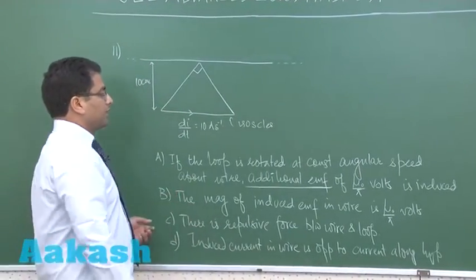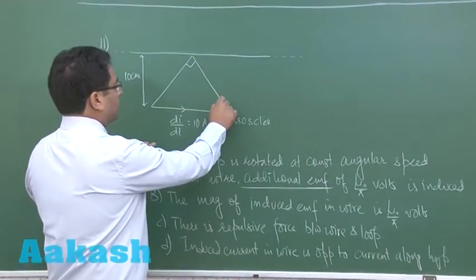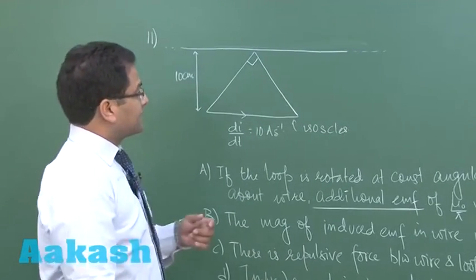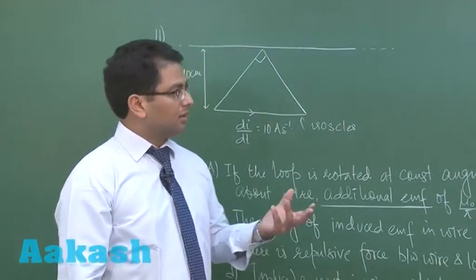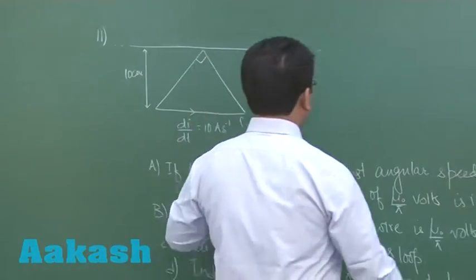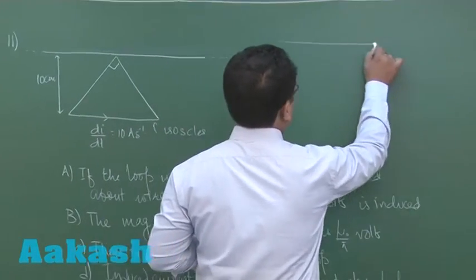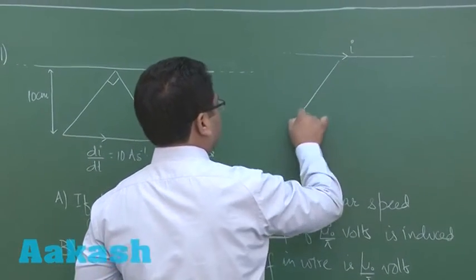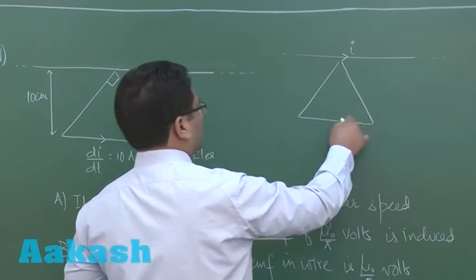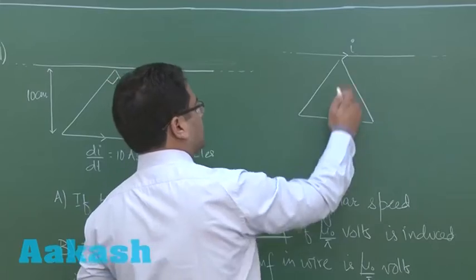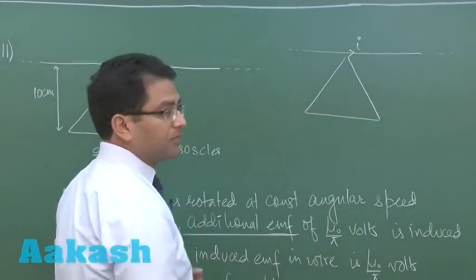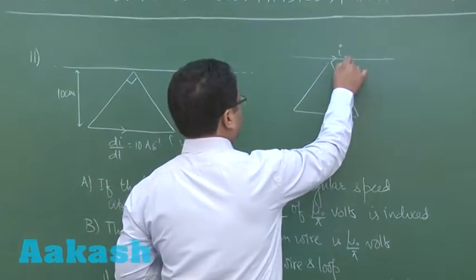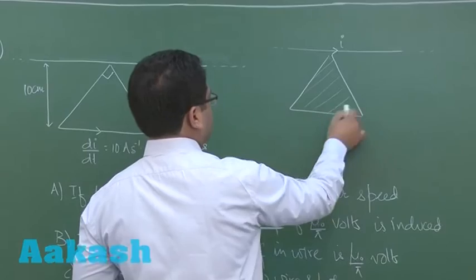The magnitude of induced EMF in the wire may be a bit tricky. Due to this particular loop, we need to calculate the induced EMF. Rather than computing flux directly, which is difficult, we can use the reciprocity idea: if the same current I is passed through the wire, the flux through the wire due to the loop and the flux through the loop due to the wire are exactly the same.